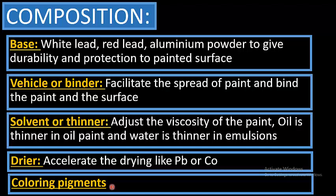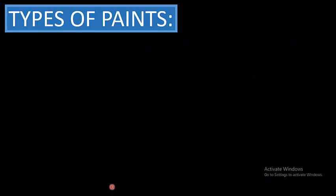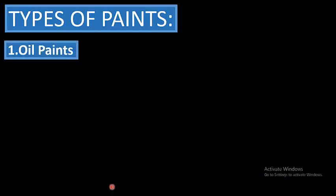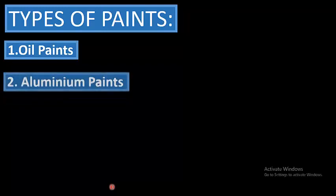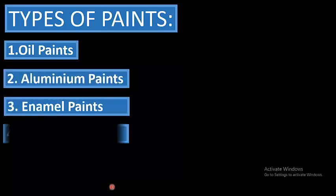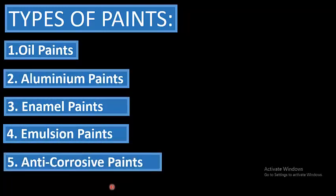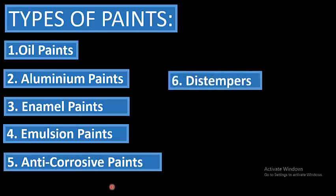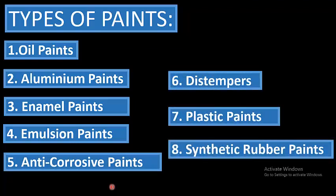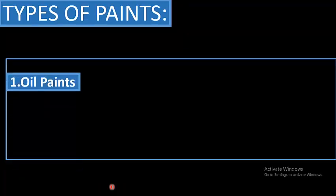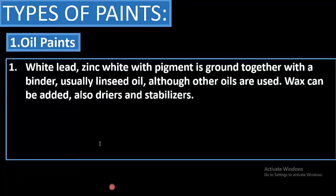Coloring pigments are also part of the composition. Proceeding towards the types of paints: oil paints, aluminium paints, enamel paints, emulsion paints, anti-corrosive paints, distempers, plastic paints, and synthetic rubber paints.